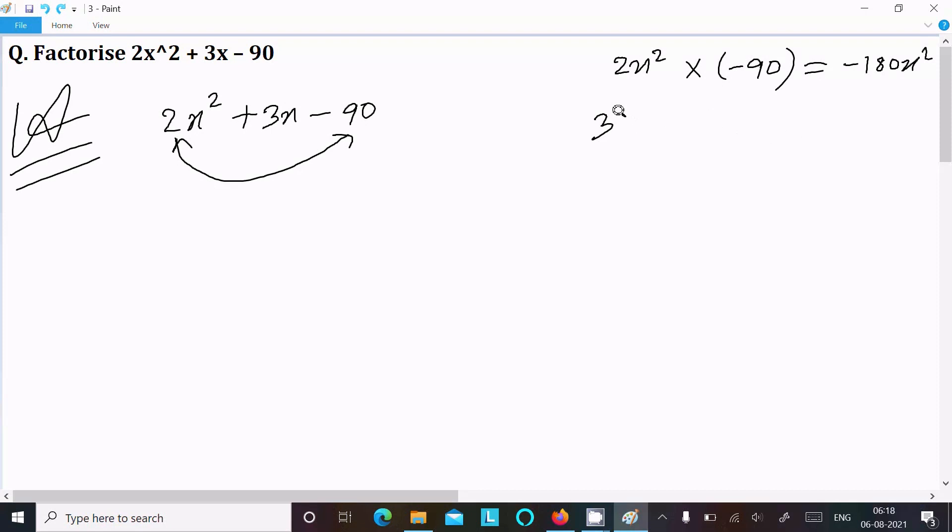Now trying with another number. Here, 3x we can write as 12x - 9x. If you subtract, it equals 3x.